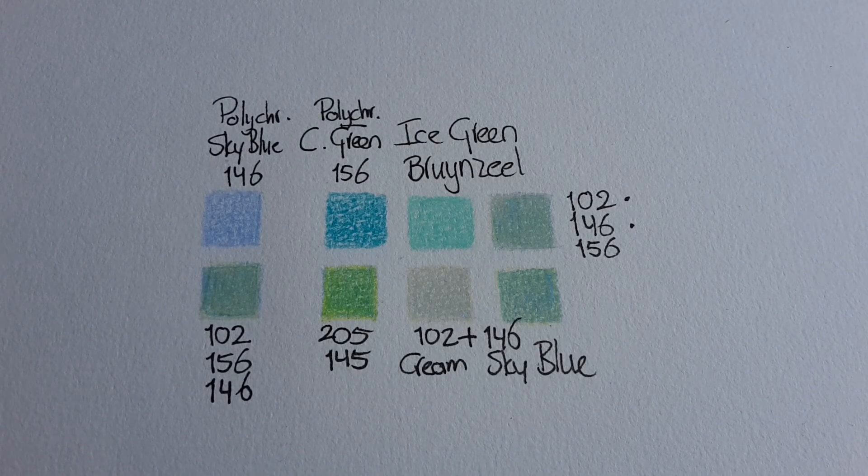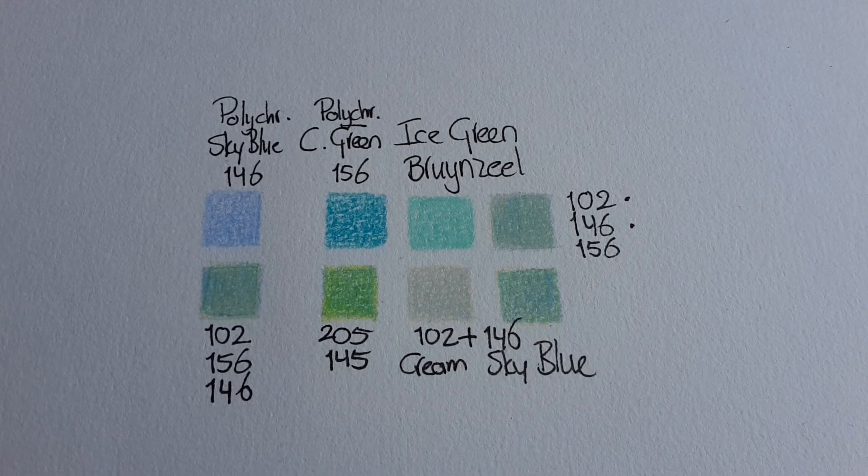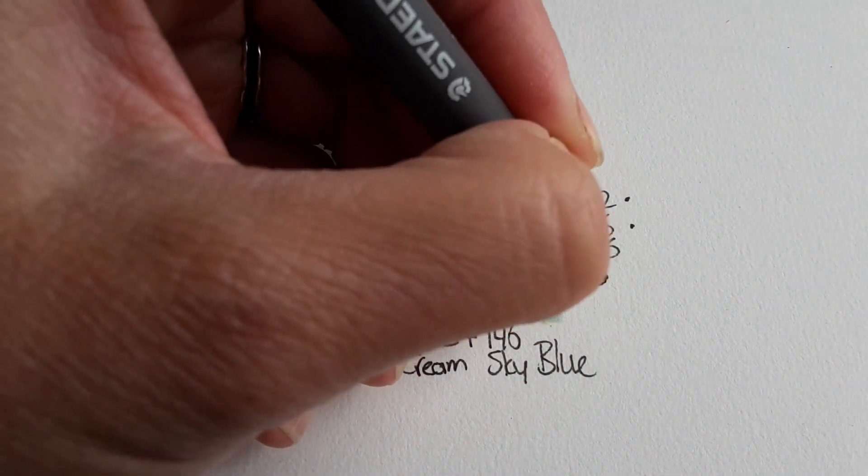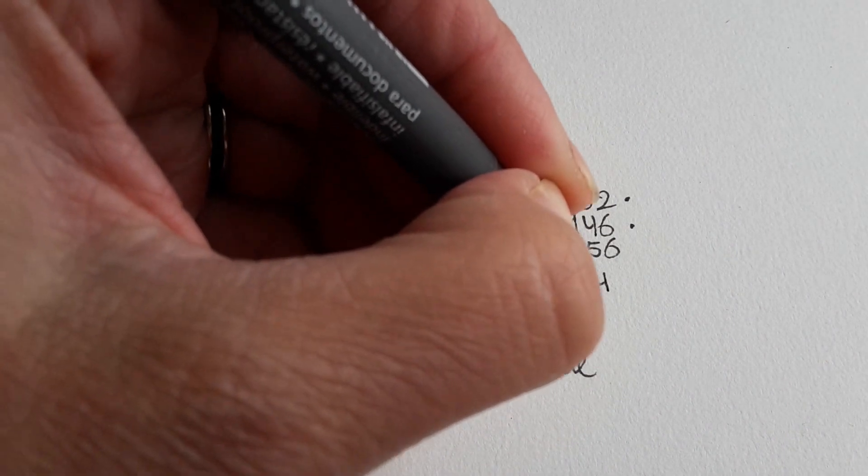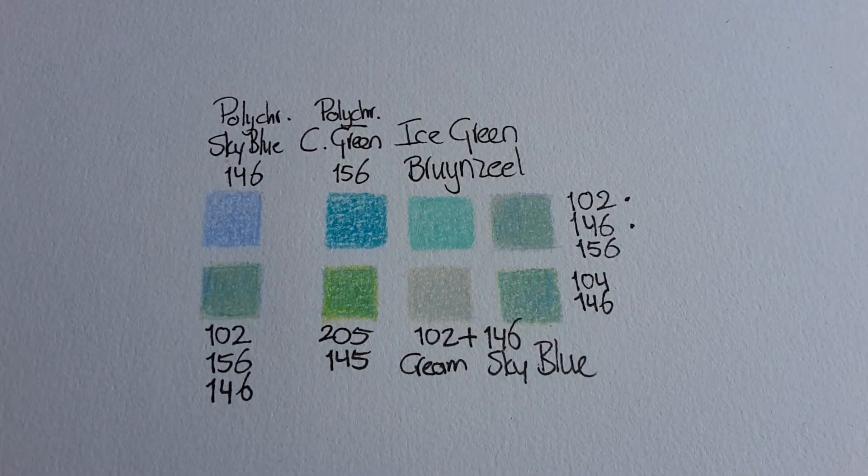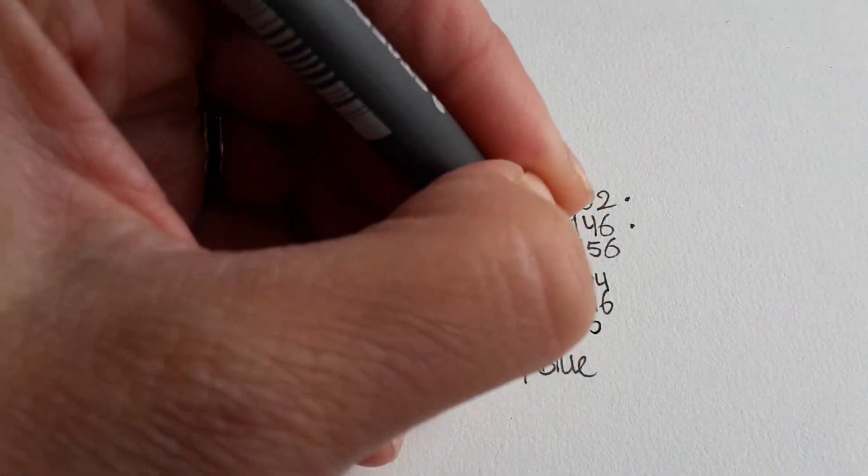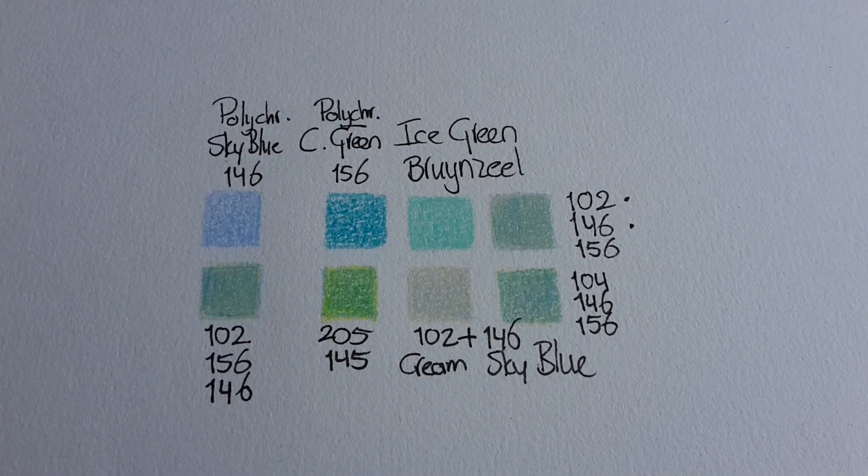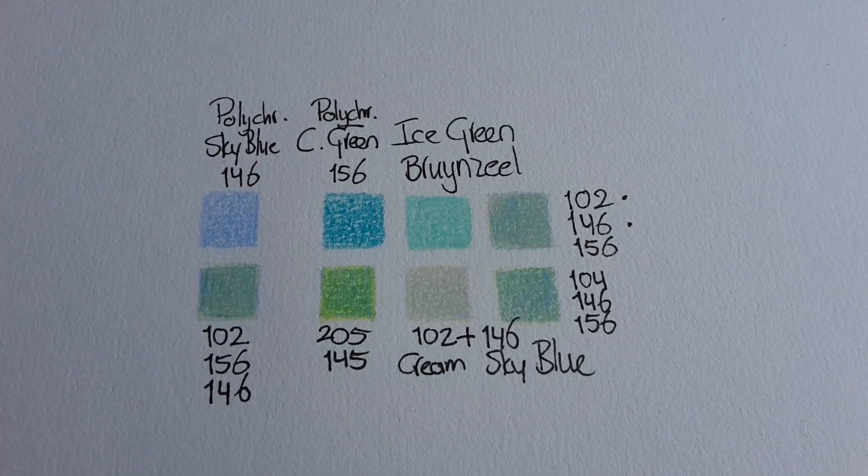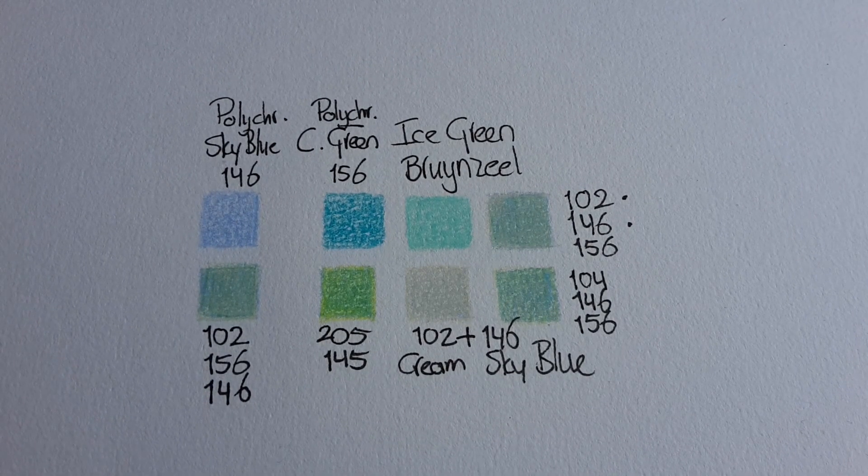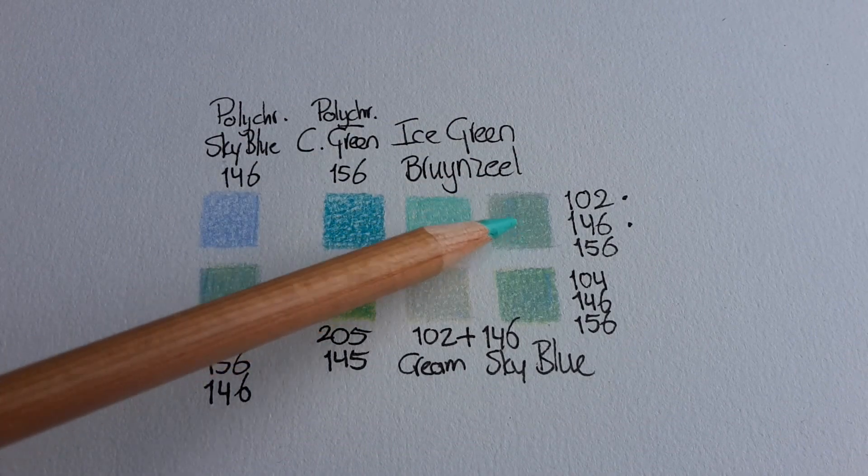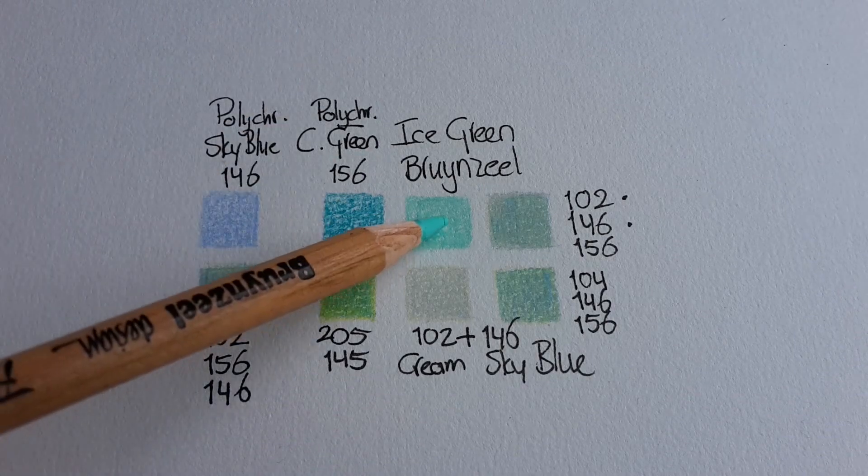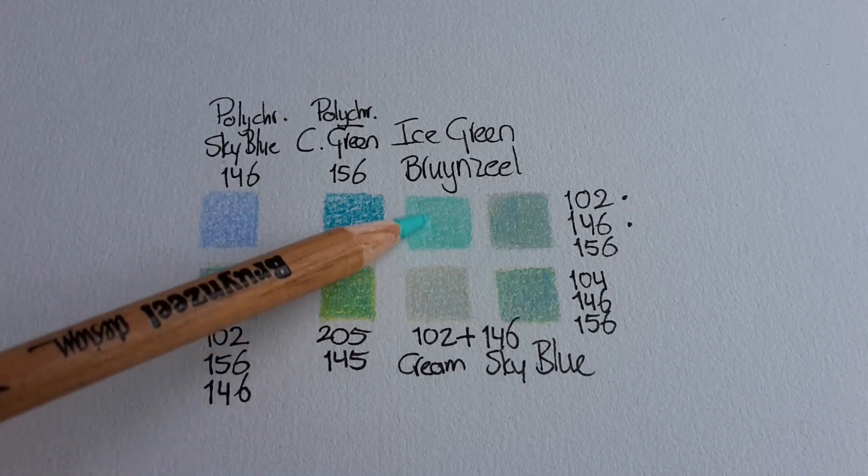So this is the other combination, and that is light yellow glaze 104, sky blue 146, and then 156 the cobalt green. So in my mind I think this combination comes closest, although it doesn't have the vibrancy of this ice green.